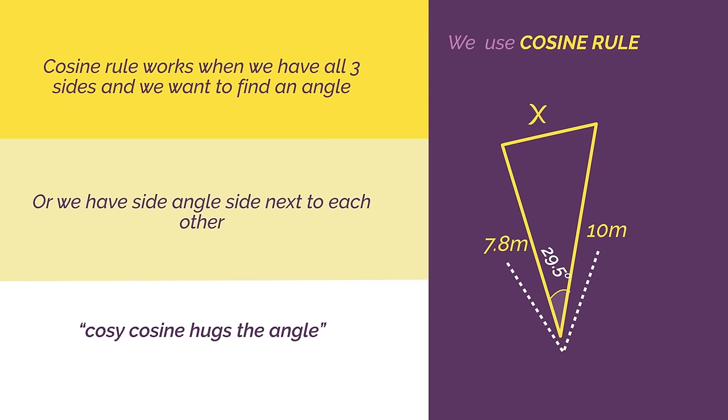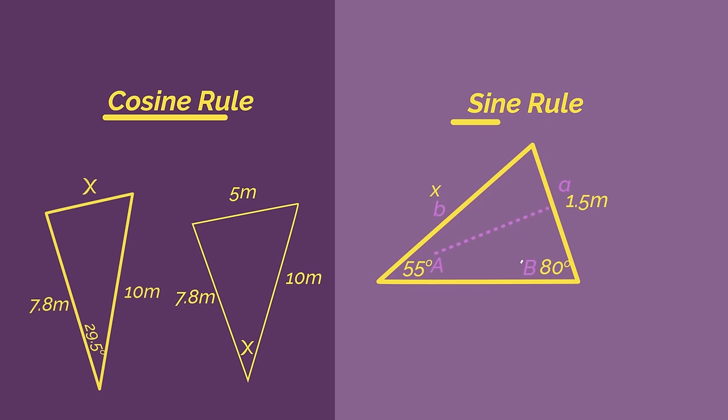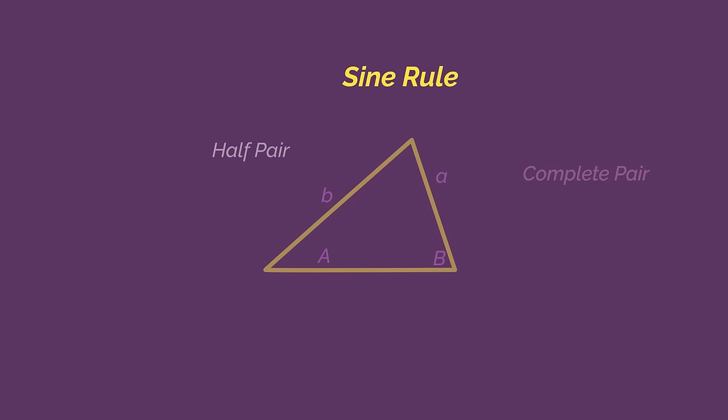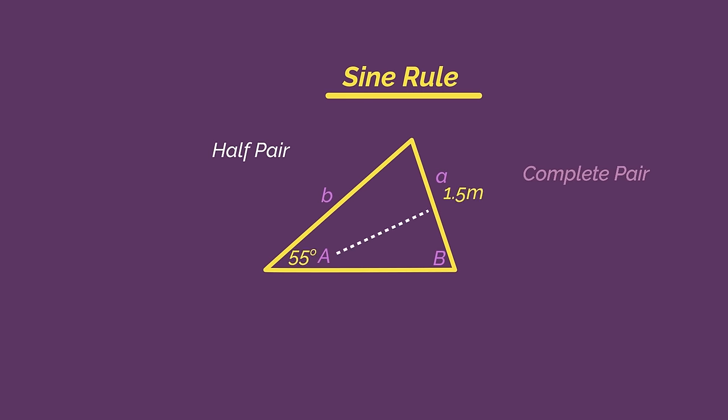So from this video you should know that if the triangle isn't a right angle triangle we can use either the sine or the cosine rule to find the missing sides or angles. You should know that the sine rule needs one complete pair and half of the second pair.